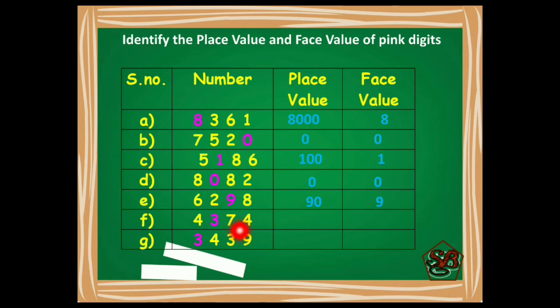Moving on to the next one. 4374. Let's begin. 1's, 10's, 100's. So 3 is at 100's place, so its place value is 300. And the face value is the number itself, that is 3.